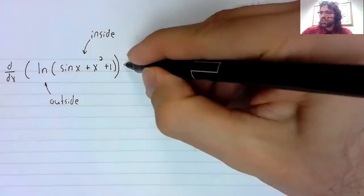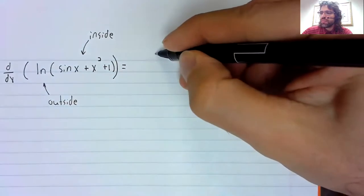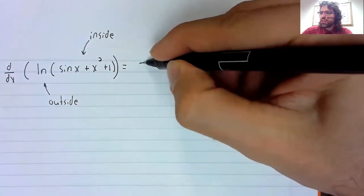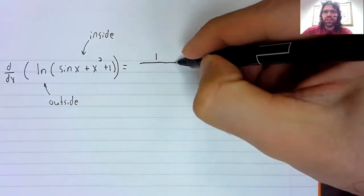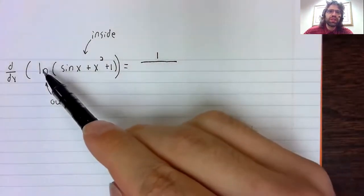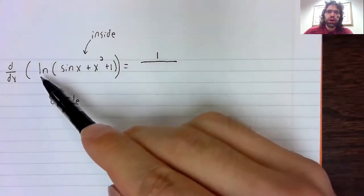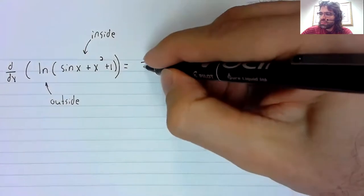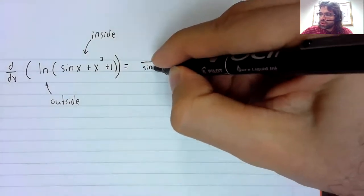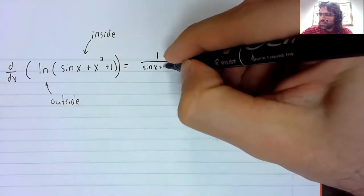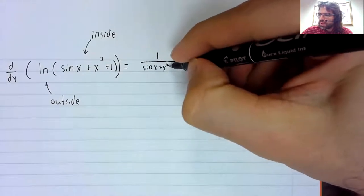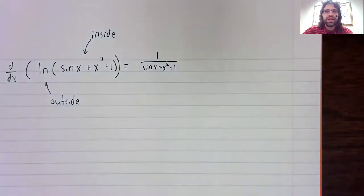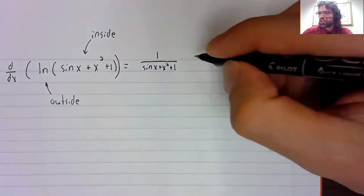So to take the derivative: one divided by x is the derivative of the natural log, but we're sticking in the inside function. So one divided by that expression